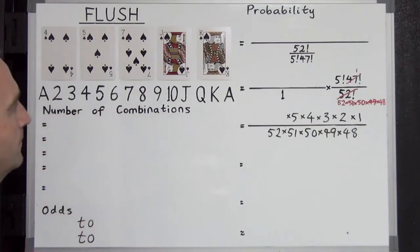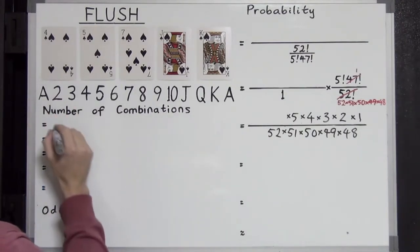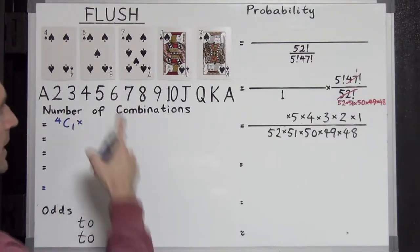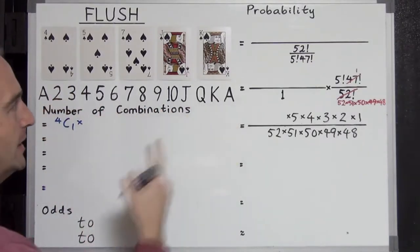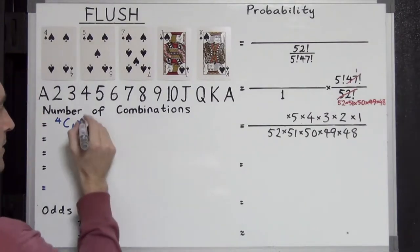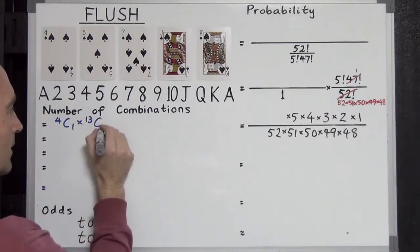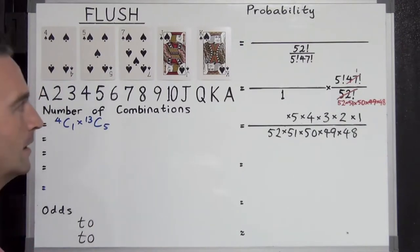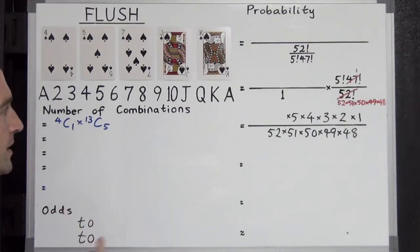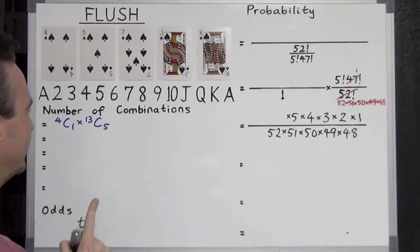As we said, we have our choice of four suits so that's going to be 4C1. And then we have 13 ranks to choose from, and we need to choose five cards from those, so it's going to be 13C5. But the problem here is this also includes the straight flush and the royal flush, so we're going to have to subtract those.